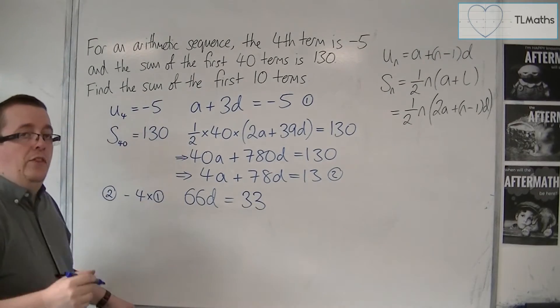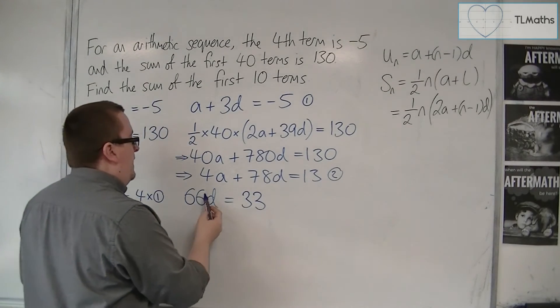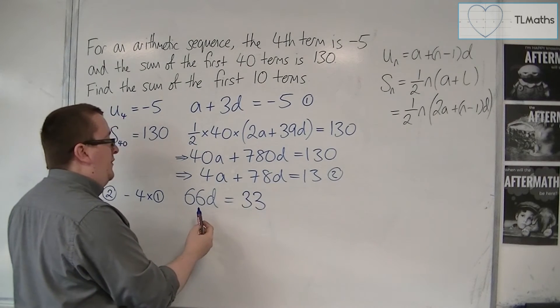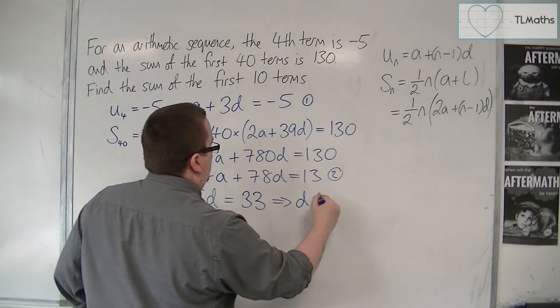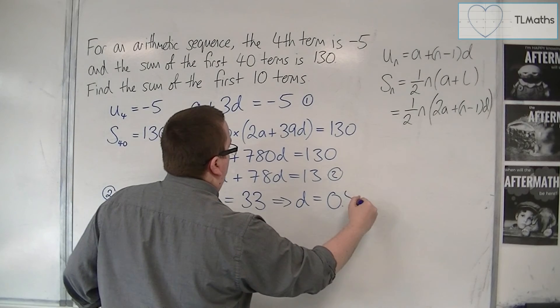So that means that the common difference is 33 divided by 66, so d is a half, or 0.5.